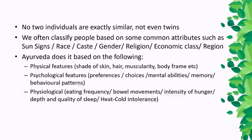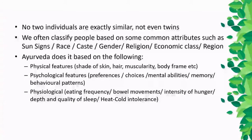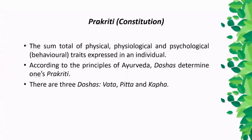Psychological features might include preferences and choices for certain foods, the kind of reaction one shows in a particular situation, mental abilities, memory, and behavioral patterns. Physiological features include frequency of eating, bowel movements, intensity of hunger, depth and quality of sleep, and intolerance to heat and cold. These are the parameters Ayurveda considers for classifying human beings into different categories, and Ayurveda calls it Prakriti.